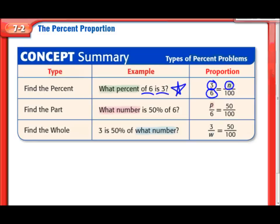Now we also might have to figure out the part. So that might look like this. What number is. So we're missing the is number. That's our part. 50%. So there's our 50 above the 100. Of 6. And again, the 6 is going to be the denominator, because it's next to the word of. We also might have to find the whole, and that'll look like this. And we have 3 is. So our 3 is in the numerator. The is is always the numerator. 50%. So again, we put our 50 over 100. Of what number? Of, again, indicates that denominator. And there's the whole that we have to figure out.